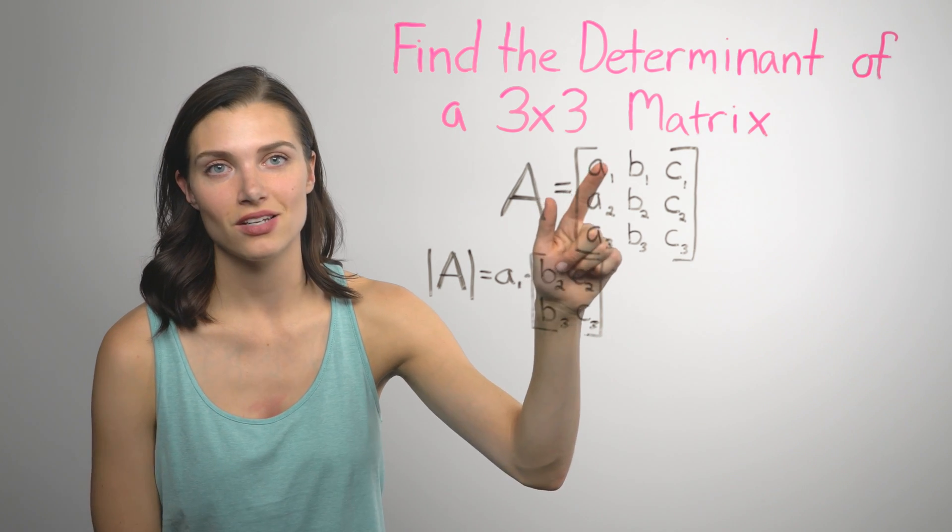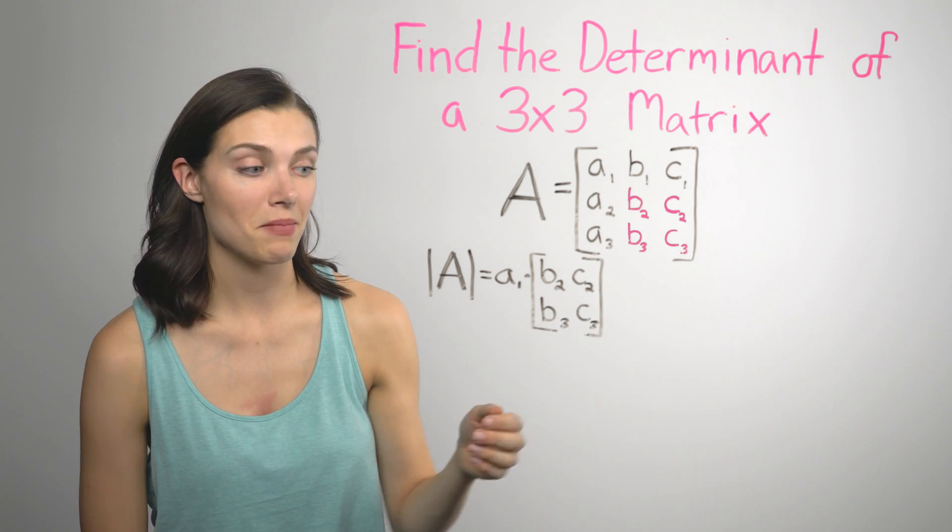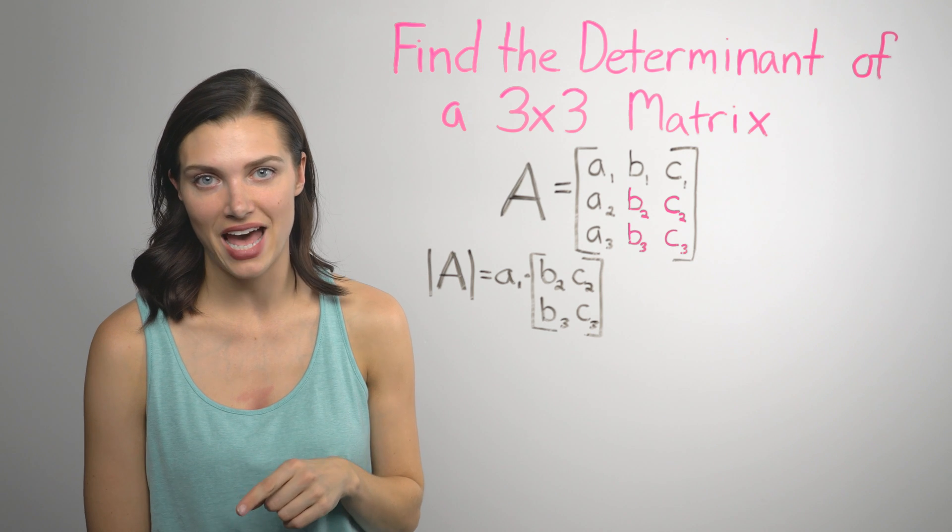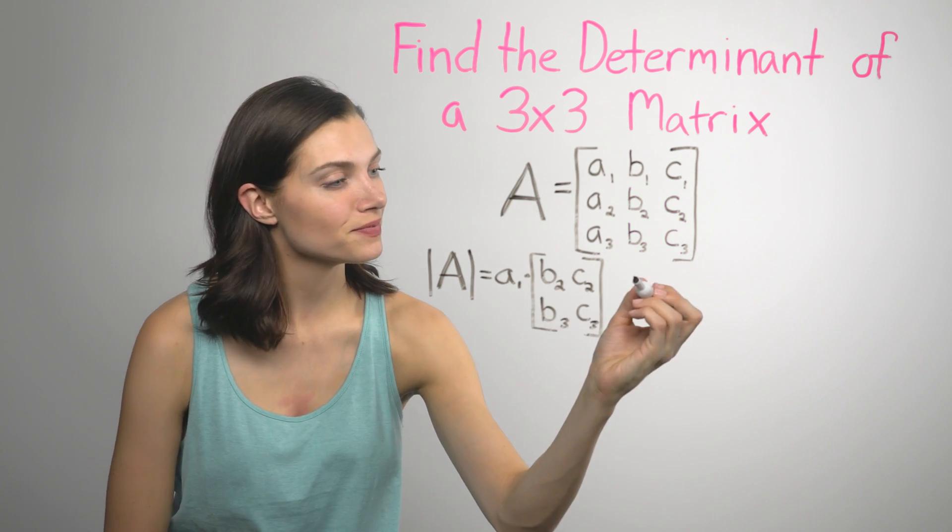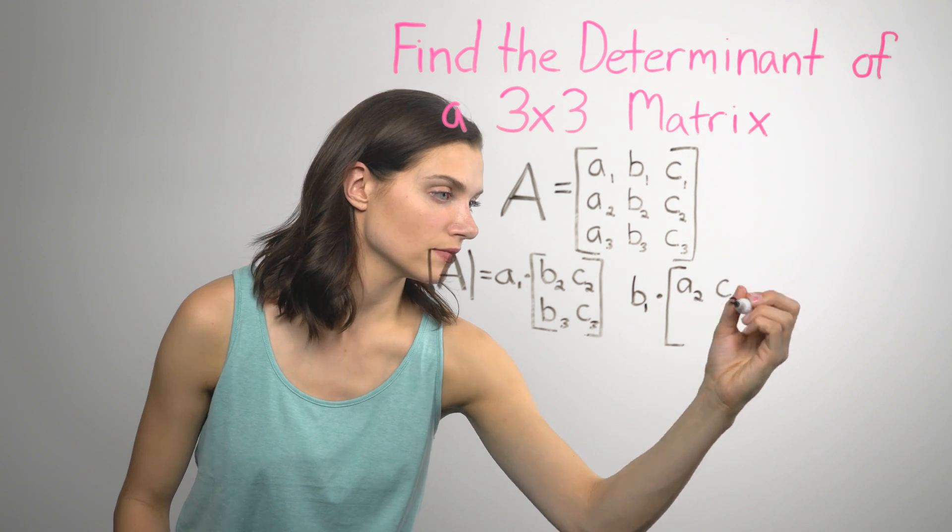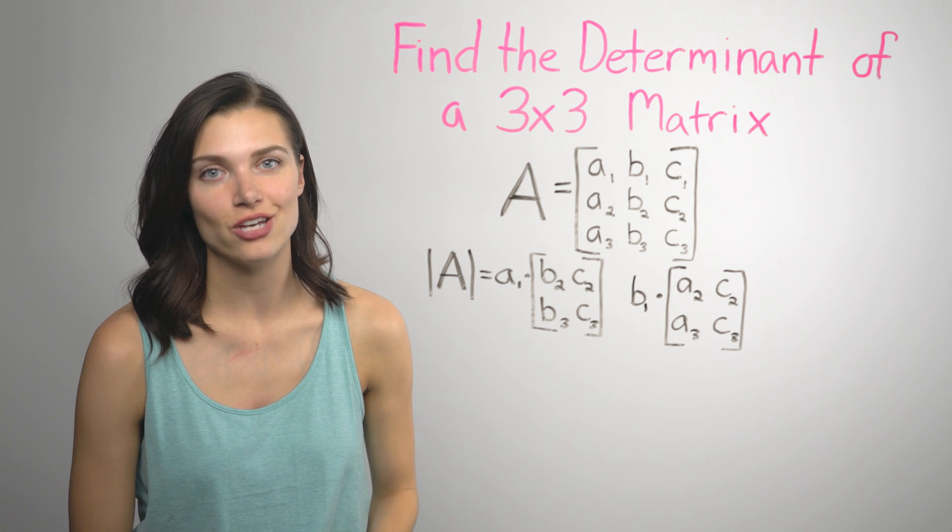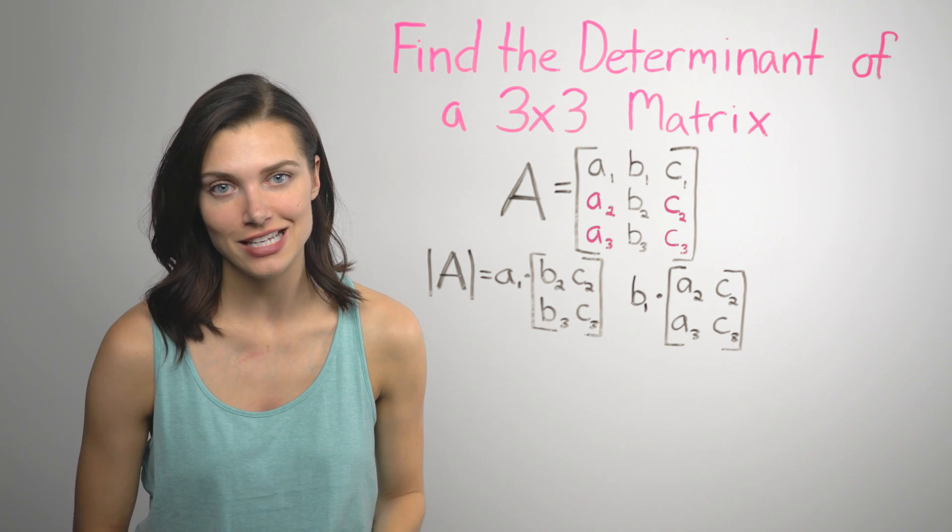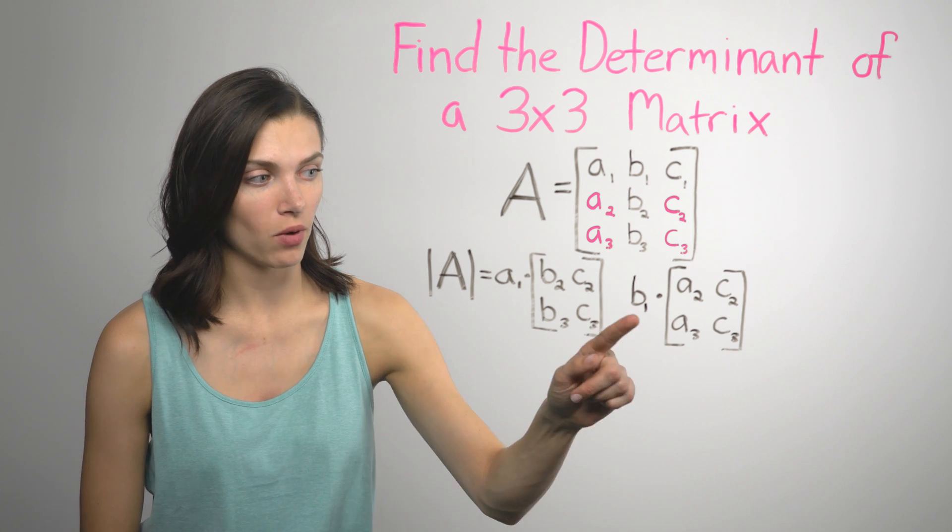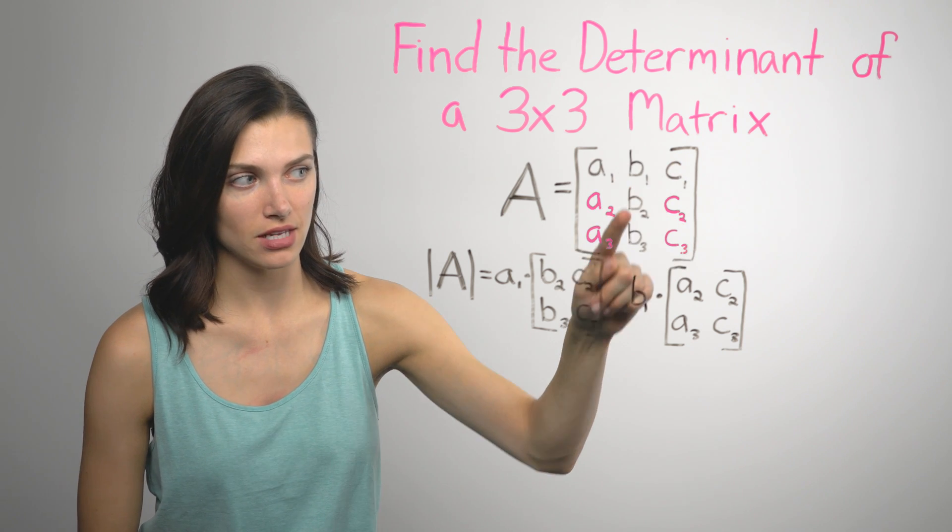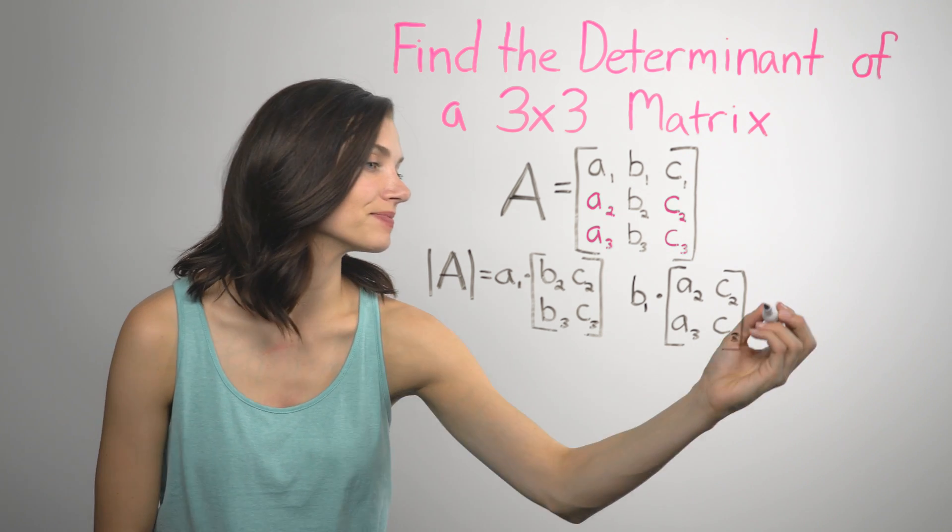Looking at the first element, we can take all of the elements that are not in the same row or column and make a new matrix. We find the determinant of that, and then multiply it by the element. So for B1, the big thing to remember is that you take the elements that are not in the same row and column as the element you're looking at. So for B1, you don't use these, you use these.